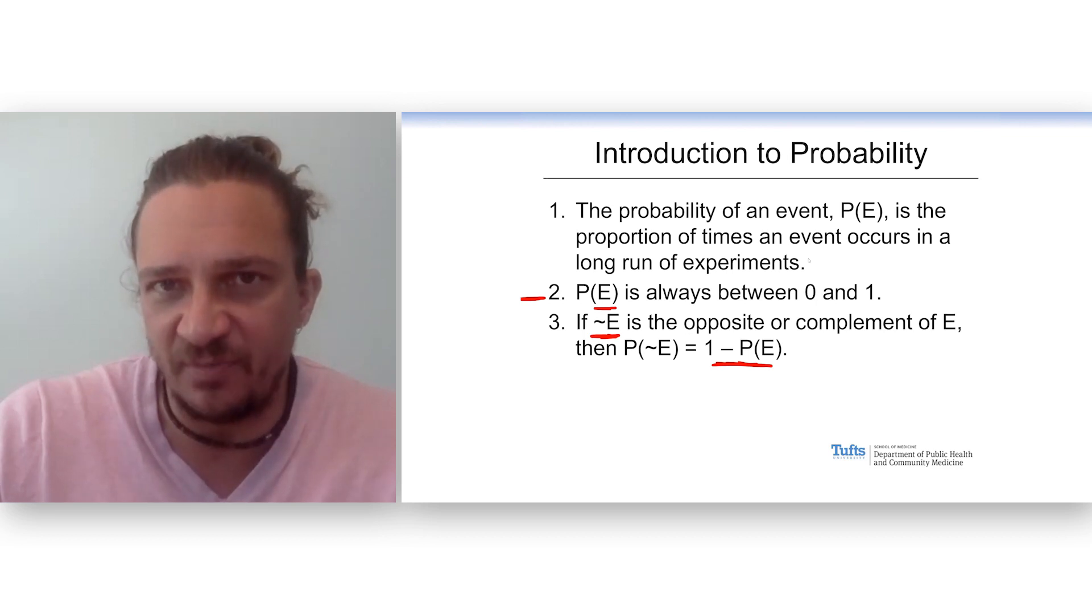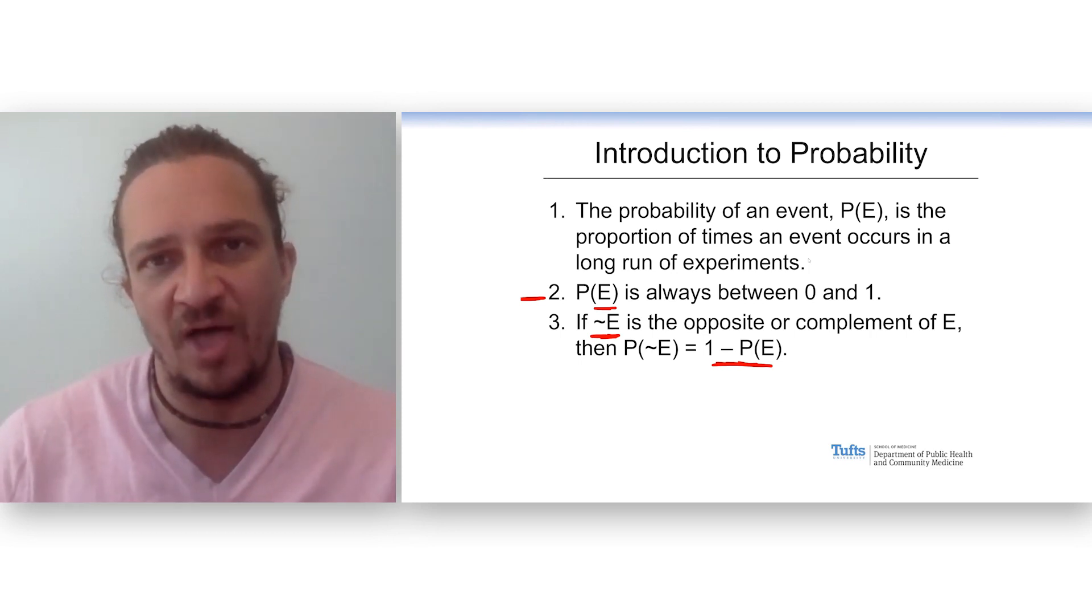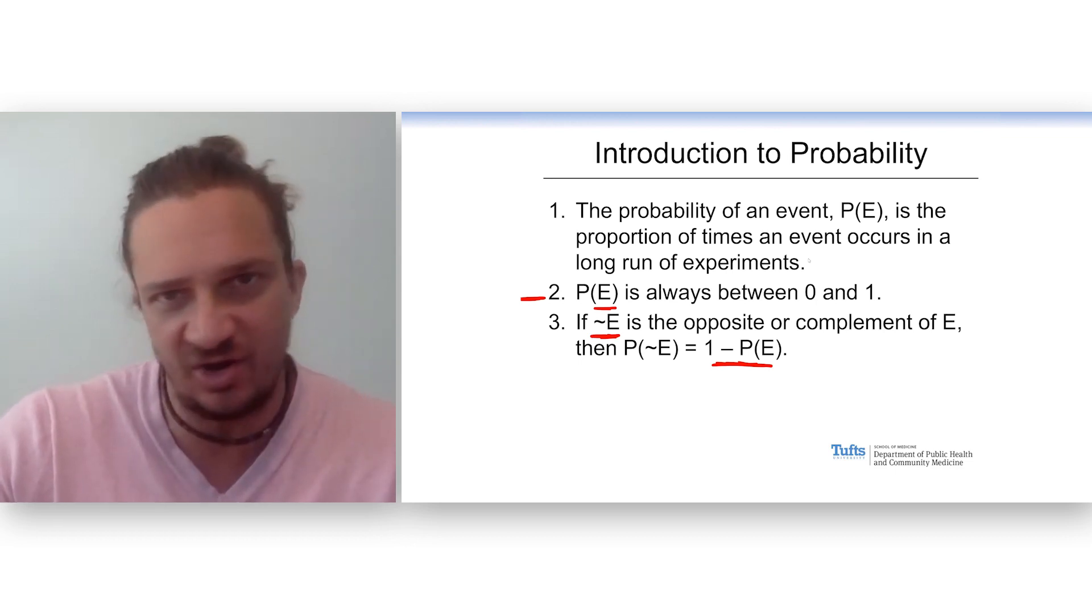Remember, a p-value is the probability of getting a test statistic of a given magnitude or larger if the null hypothesis is true. In other words, it's the probability of getting my data if nothing is going on. Statistics is backwards. You assume nothing is going on. Then you go out and collect some data and you say, what's the probability I got my data if that hypothesis was true? But we need to think about probability.